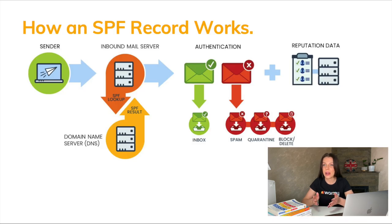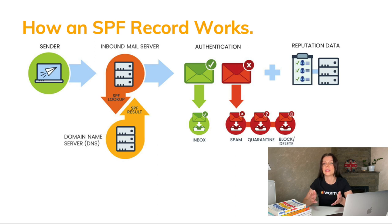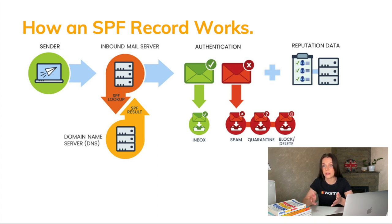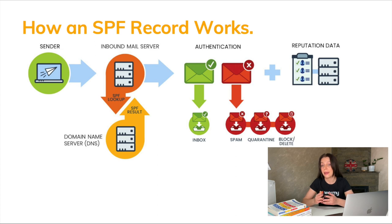How does an SPF record work? After the message is sent, the recipient's mail server checks which IP addresses the message came from. It checks it against the list written in the SPF record. If the address is on the list, then everything is in order and the letter goes into the inbox. If the IP address is not on the list, the email may be blocked by the mail provider.